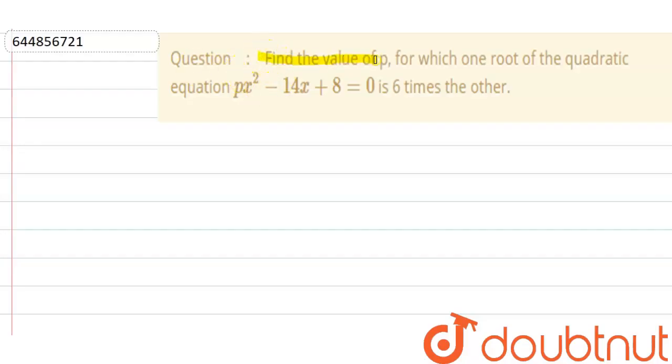Hello everyone. So our question is: find the value of p for which one root of quadratic equation p x square minus 14 x plus 8 is equal to zero is six times the other. We need to find the value of p.